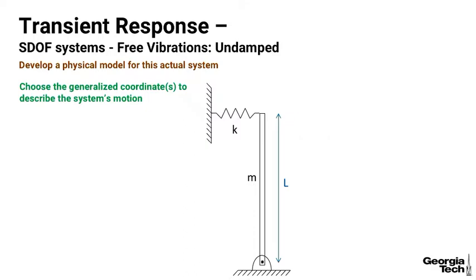So let's go ahead and develop a physical model for that actual system. You can see that I've drawn my yardstick here. That's where all my mass is going to occur, and I have a spring at the top. This would be my hand, which I've modeled as a support. We then have to choose the generalized coordinate to describe the motion. You should have said theta, like we did last time.